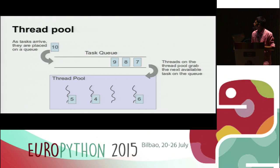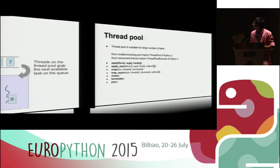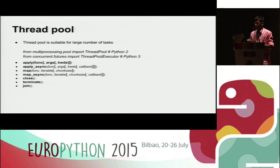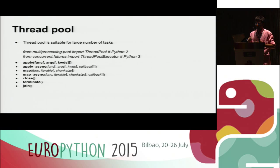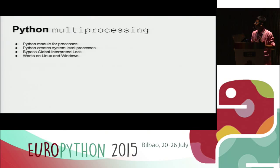Thread pools are useful whenever you want to fix the number of threads you want to open, but you have too many tasks to do and don't want to open more than a certain number of threads. Thread pools are kind of a queue where you add your tasks and they are assigned to the open threads. When starting a thread pool you tell it how many threads you want — for example four — and it will queue all the inserted arguments and assign them to the started threads.